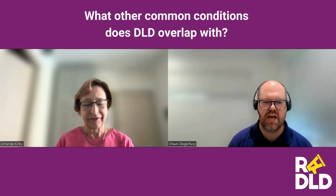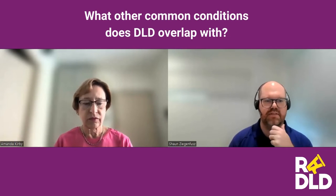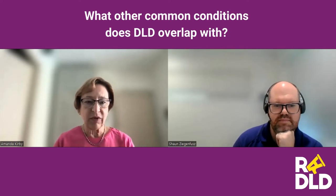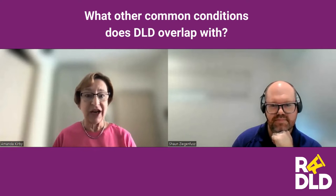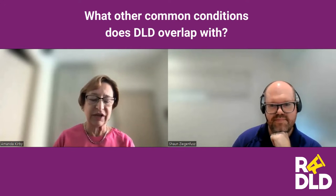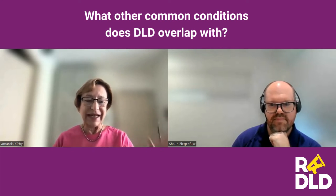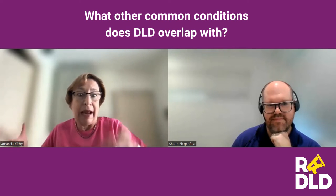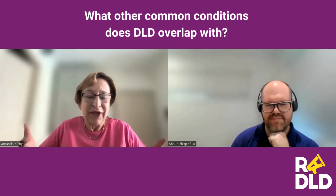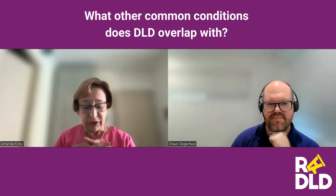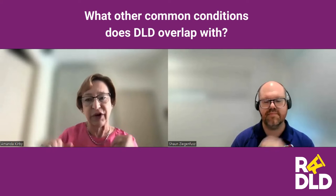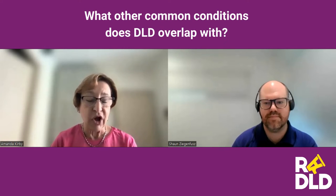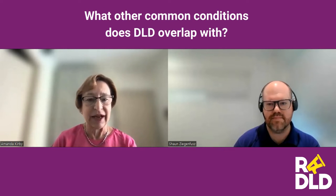What are some of the conditions that co-occur with developmental language disorder, and how do they overlap? Let's start with dyslexia. Dyslexia and DLD commonly overlap — and that's not a surprise, because dyslexia involves reading, spelling, and writing, and developmental language disorder has to do with language. They're obviously going to be bedfellows, but we don't always think about it. About 48 to 87%, depending on how you do the definitions and how you assess people, have overlap between dyslexia and developmental language disorder.